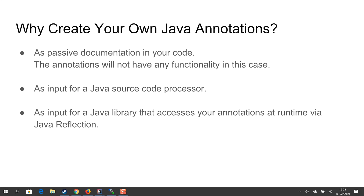The second use case is to use annotations as input for a Java source code processor, which means you will have some kind of program that reads through your Java source code, locates your Java annotations, and does something with them. This is not a very common use case but it is a possible one. The last use case is that annotations function as input for some Java library that accesses your annotation at runtime via Java reflection. If you are designing a Java library which takes classes or objects as input, it can be useful to allow these classes and objects to be annotated.